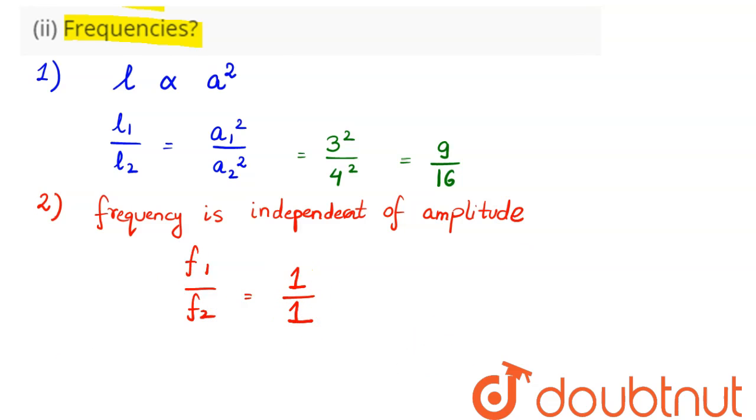we can say remains constant. It does not depend on amplitude. So the ratio of their frequencies can be written as 1:1 since frequency is independent of the amplitude. There is no relation relating frequency to amplitude.